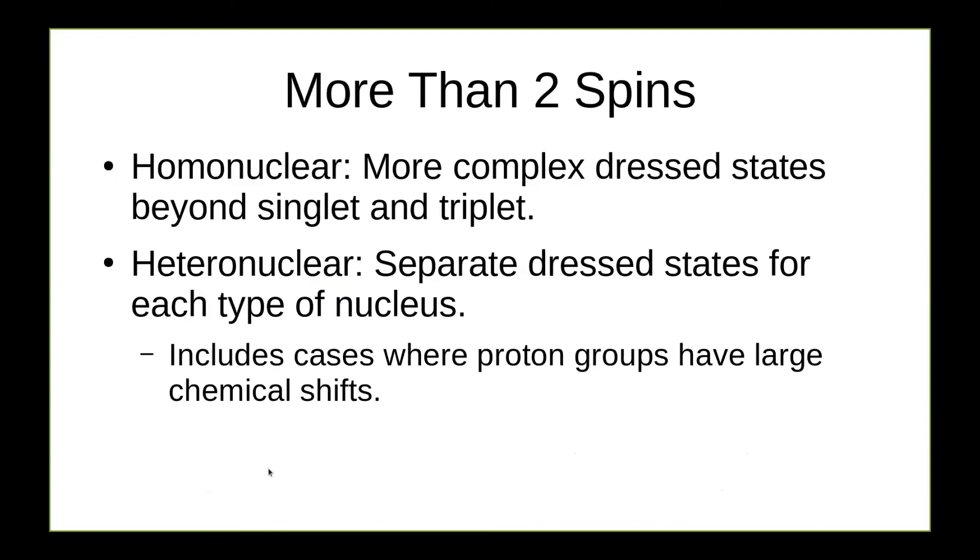Now what happens if we have more than two spins? For example, in a FIP system or a SABER system? Well, we can split this into two different situations, which I'll talk about. The first is a homonuclear case. For example, what if we have many spins that are all equivalent? Then we end up getting complex stress states, beyond just singlet and triplet. The other case is a heteronuclear system. So let's say we have separate stress states, singlet and triplet for each type of nucleus, but we can access them individually. For example, if we have a pair of protons and a pair of carbon-13s, or if we have cases where the proton groups have large enough chemical shifts. So let's talk about this second case first.